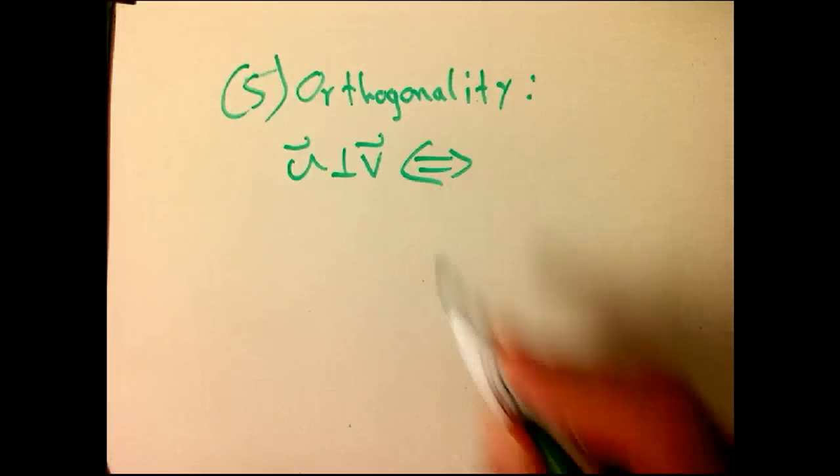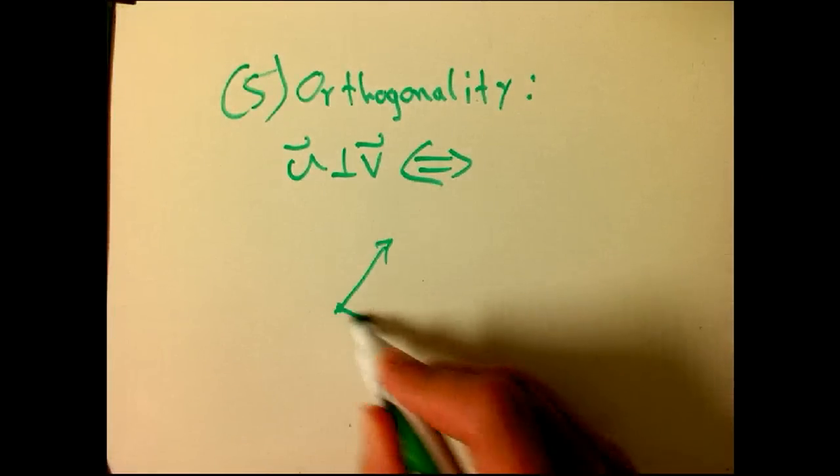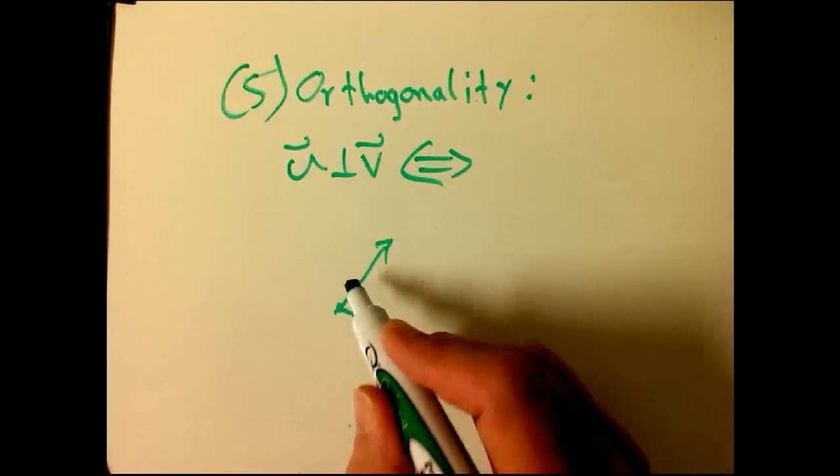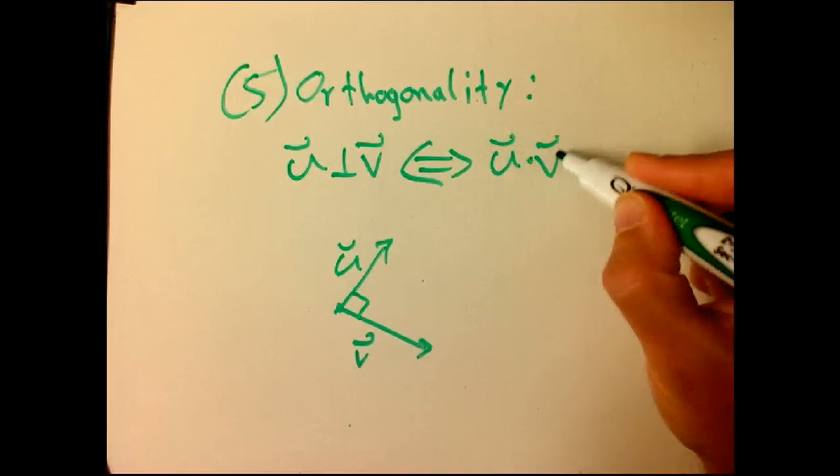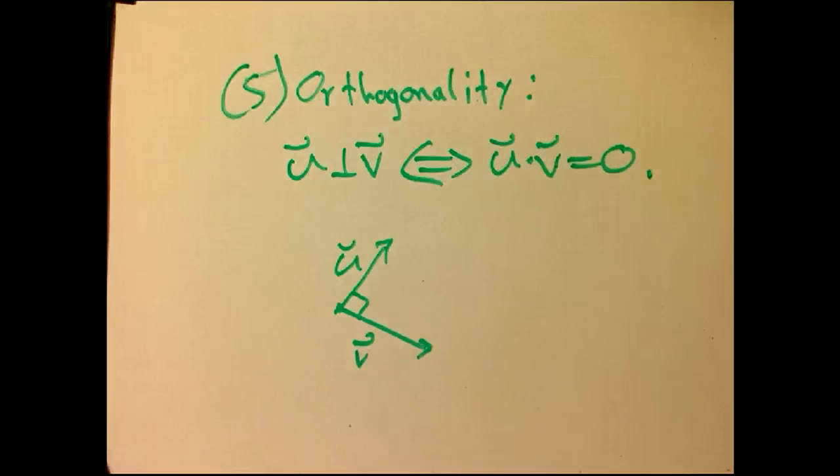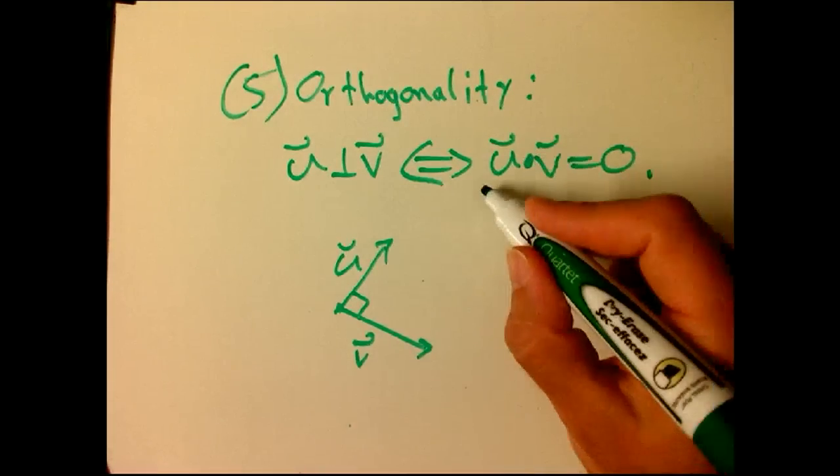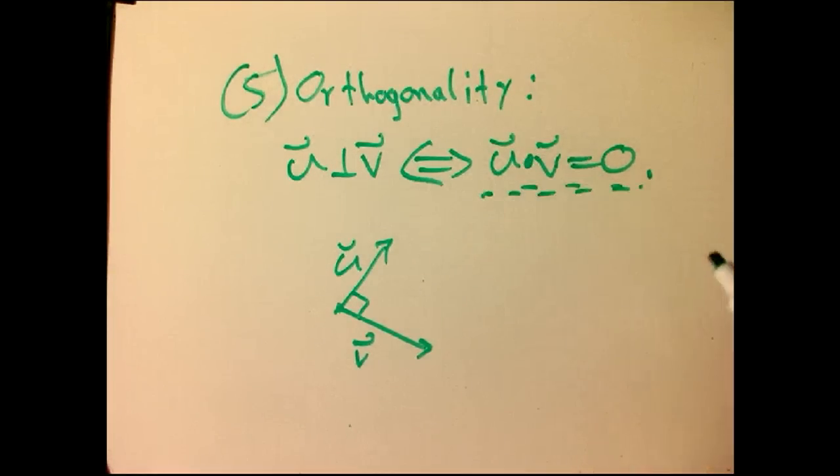It says the two vectors are orthogonal. Well, that's going to be when the cosine is zero, and that's going to be when the dot product is equal to zero. Okay. So, that says that dot product of two vectors equaling zero is the definition of orthogonality, and that's going to be true in our modified version of geometry as well.